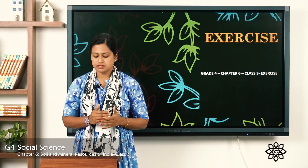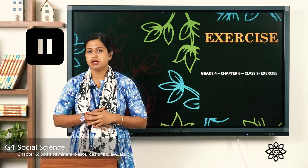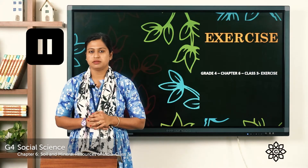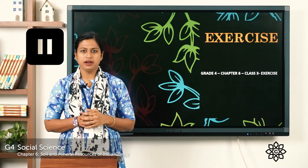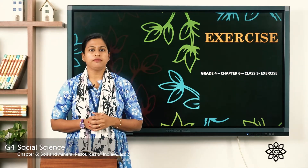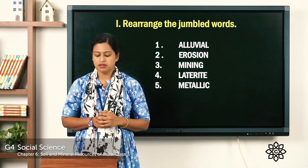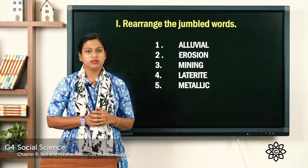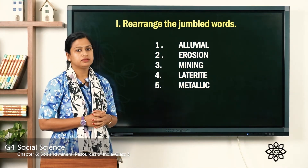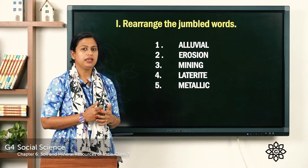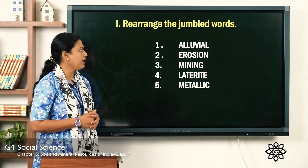The first given exercise is rearrange the jumbled words. You have to pause the video and arrange them. I hope you all have done it. Now let's check the answer. The first word is alluvial, spelling is A-L-L-U-V-I-A-L.